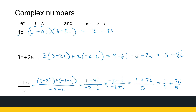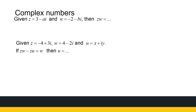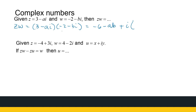It's good to practice these things, though calculators can do it for you. Now for a symbolic example: Z equals 3 minus Ai and W equals minus 2 minus Bi. Let's find ZW. We treat it the same way and get: real part minus 6 minus AB (since ABi² = minus AB), and imaginary part plus i times (2A minus 3B). We can't simplify further without knowing the values of A and B.